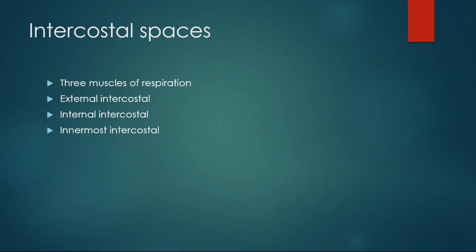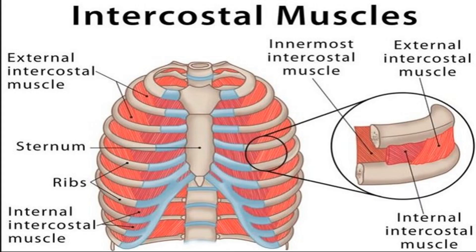We were learning anatomy of the thoracic wall and we were at muscles of the thoracic wall. Today we will learn intercostal muscles. In the intercostal spaces there are found three groups of intercostal muscles: external intercostal muscles, internal intercostal muscles, and innermost intercostal muscles. They are basically the muscles of respiration — they assist respiration.